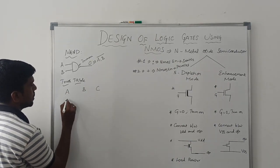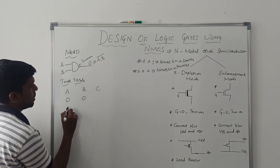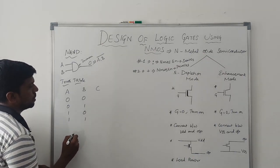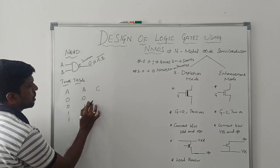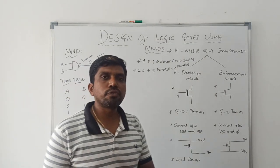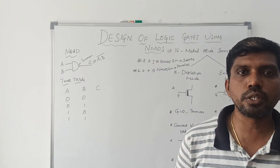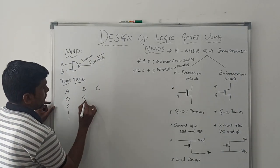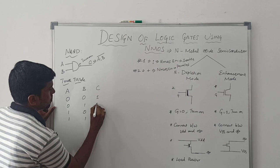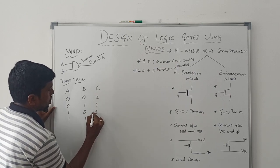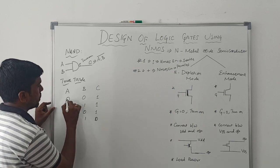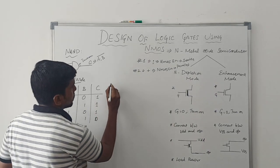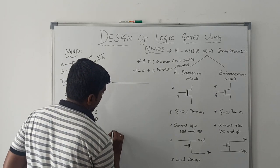Now I am going to write the truth table. The inputs are A and B, and the output is C. These two variables make four combinations of input: 0 0, 0 1, 1 0, 1 1. Using the property of NAND gate — if any one input value is 0, the corresponding output is 1 — the output values are: 1, 1, 1, 0. This is the truth table of the NAND gate.